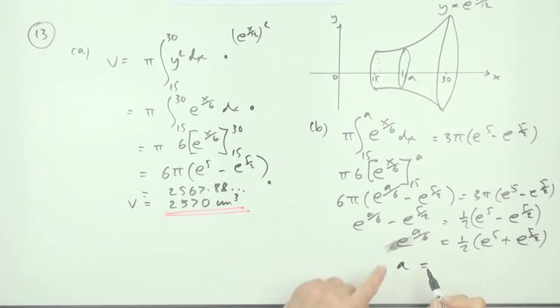And then finally a would be ln times 6, so 6 ln of a half of e to the 5 plus e to the 5 upon 2. And then you could press the button and get a more accurate answer which probably turns out to be much the same anyway.